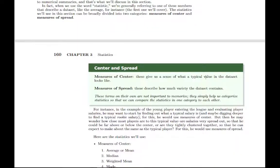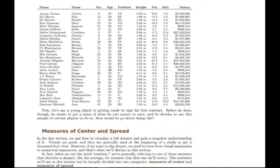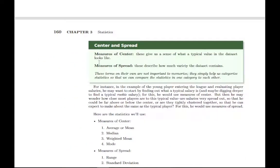Measures of center basically give us a sense of what a typical value in that data set is. Just looking at these numbers, a typical value is going to be somewhere in the 20s and 30s, and we can nail that down more specifically when we look at specific measures of center. It doesn't look like the data is too spread out — pretty tightly clustered in the 20s and 30s, not ranging from say 15 to 60. It's a pretty tight range. Some statistics are measures of center and others are measures of spread.